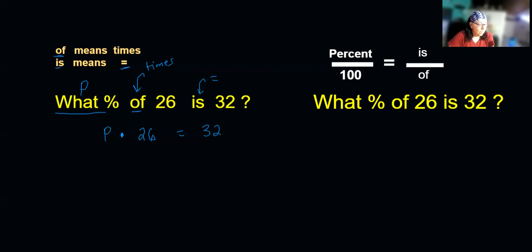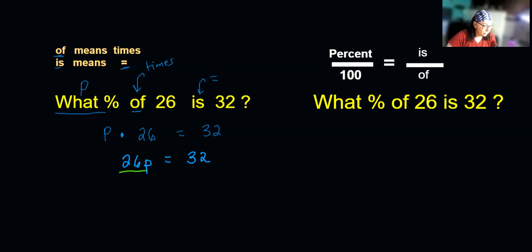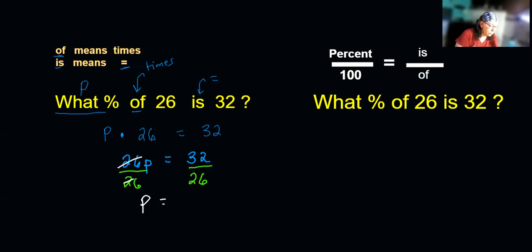Now I've got 26 times P, which is 26P, equals 32. But I don't want 26P — I want P; we're looking for the percent. So what do we have to do? They're multiplying, so we are going to divide. Whatever we do to one side, we've got to do to the other. It's 26 times P, so I'm going to divide by 26 on both sides.